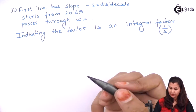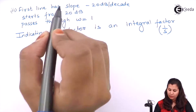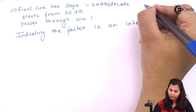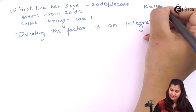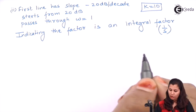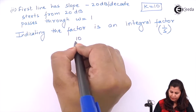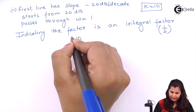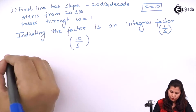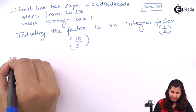The integral factor is 1/s. It is starting from 20 dBs, and the value of K we obtained is 10. So this integral factor will be 10/s. That was our second finding.